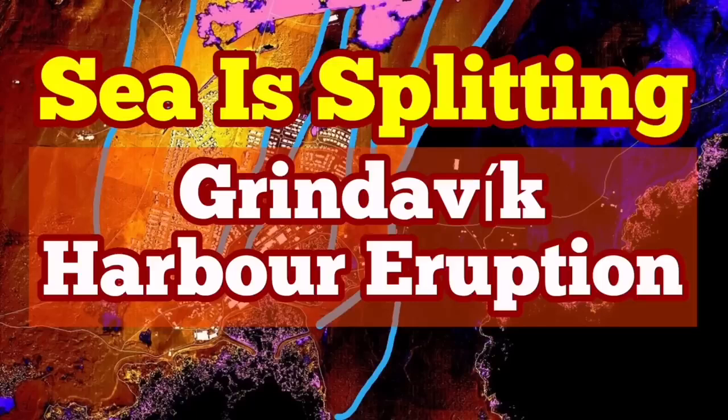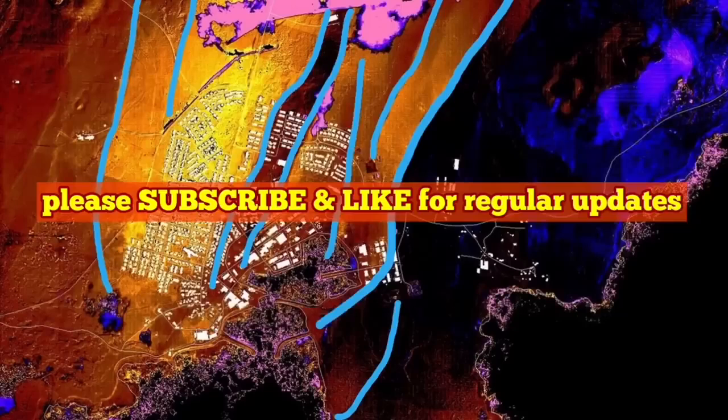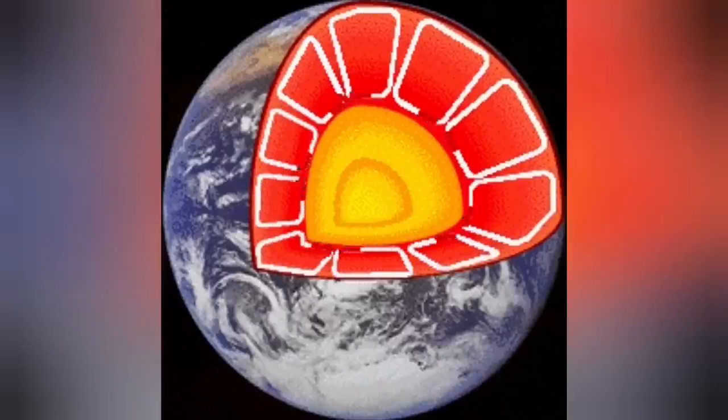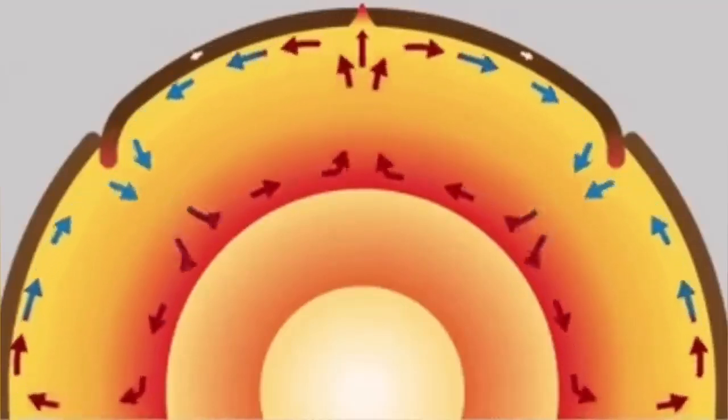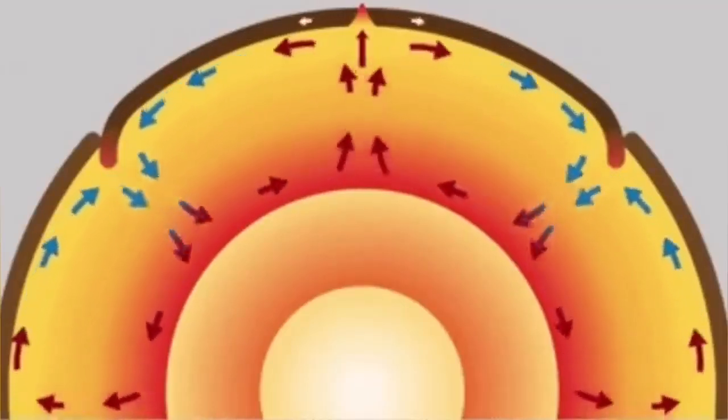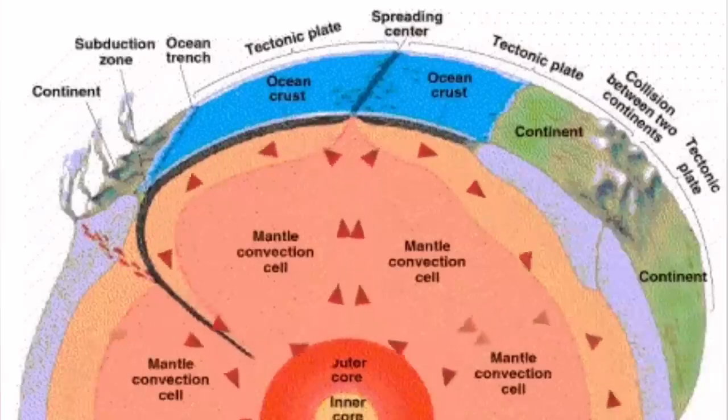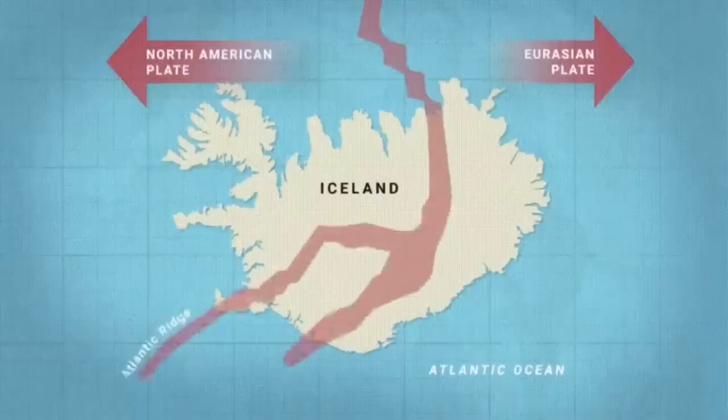From the time of the creation of the Earth, the inner core of it, with the radioactive decay and the impact heat, was hot. This heat creates convection cells through the mantle of the Earth, which rises to the surface and cracks the hardened solidified crust of the Earth.